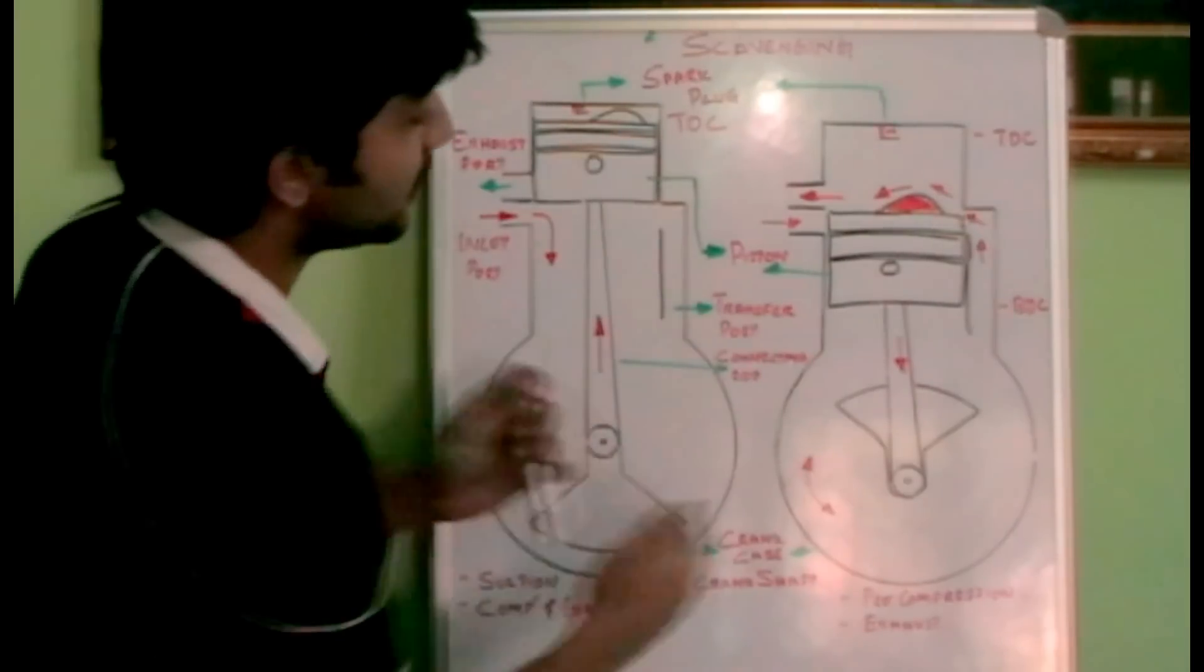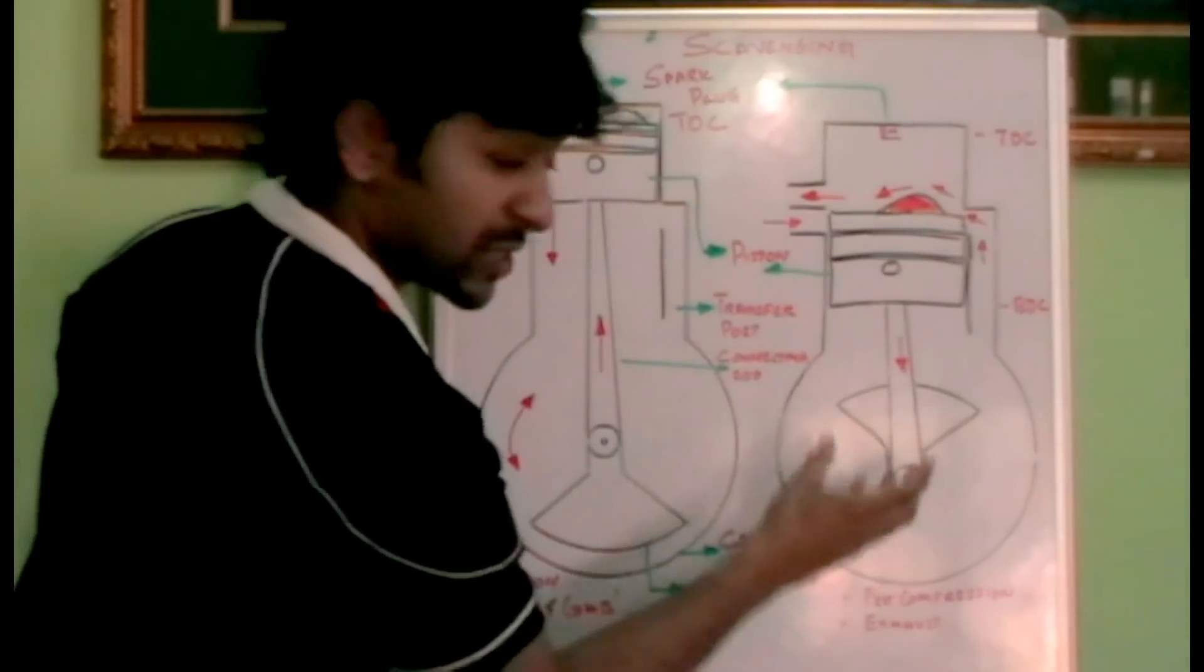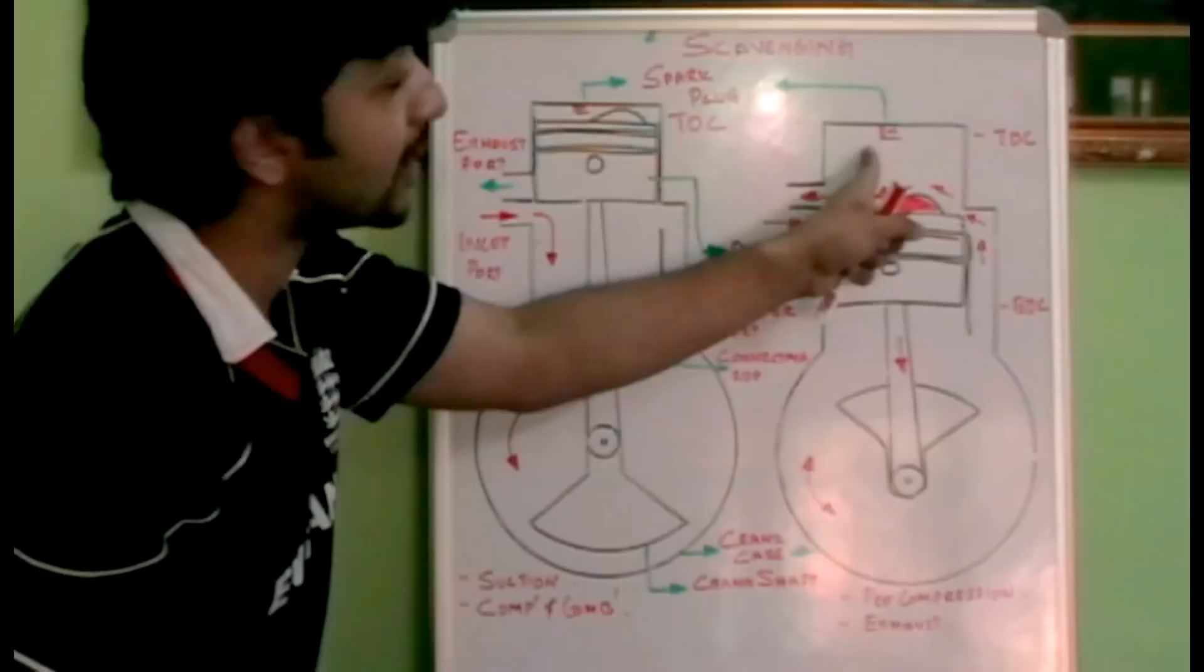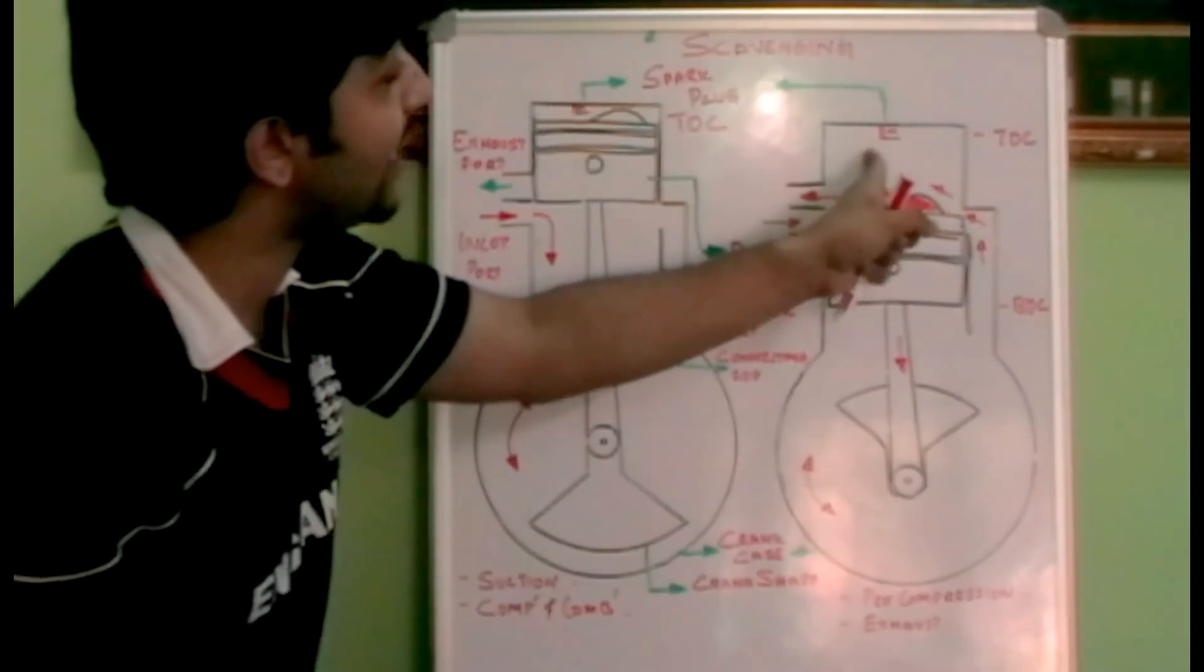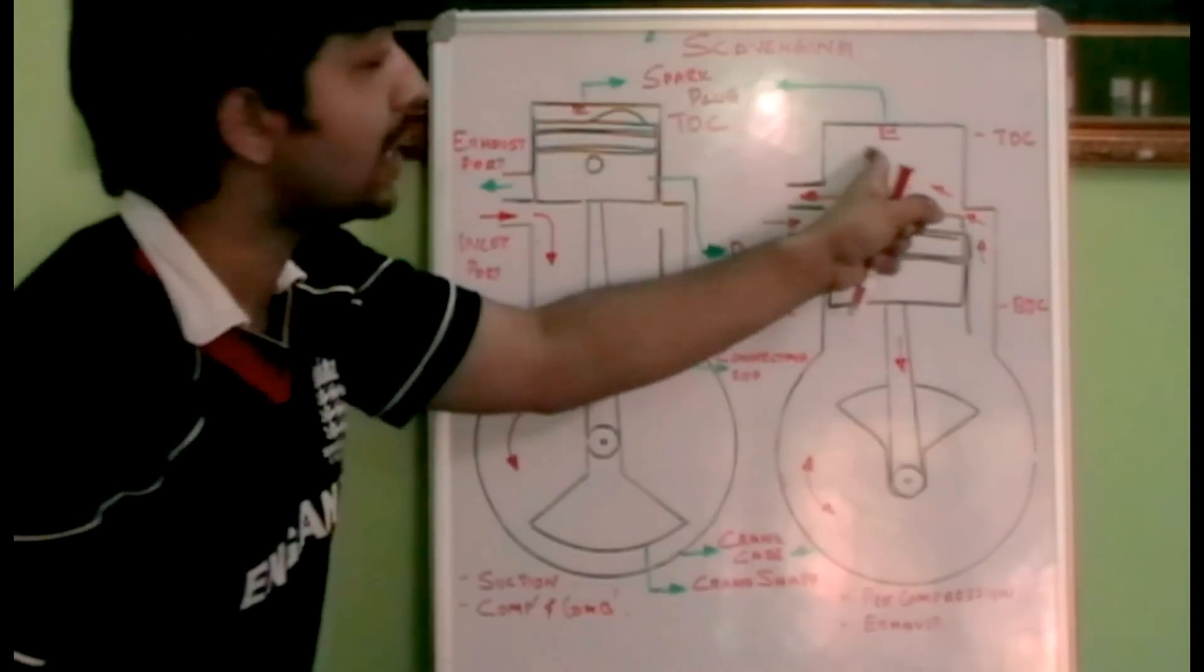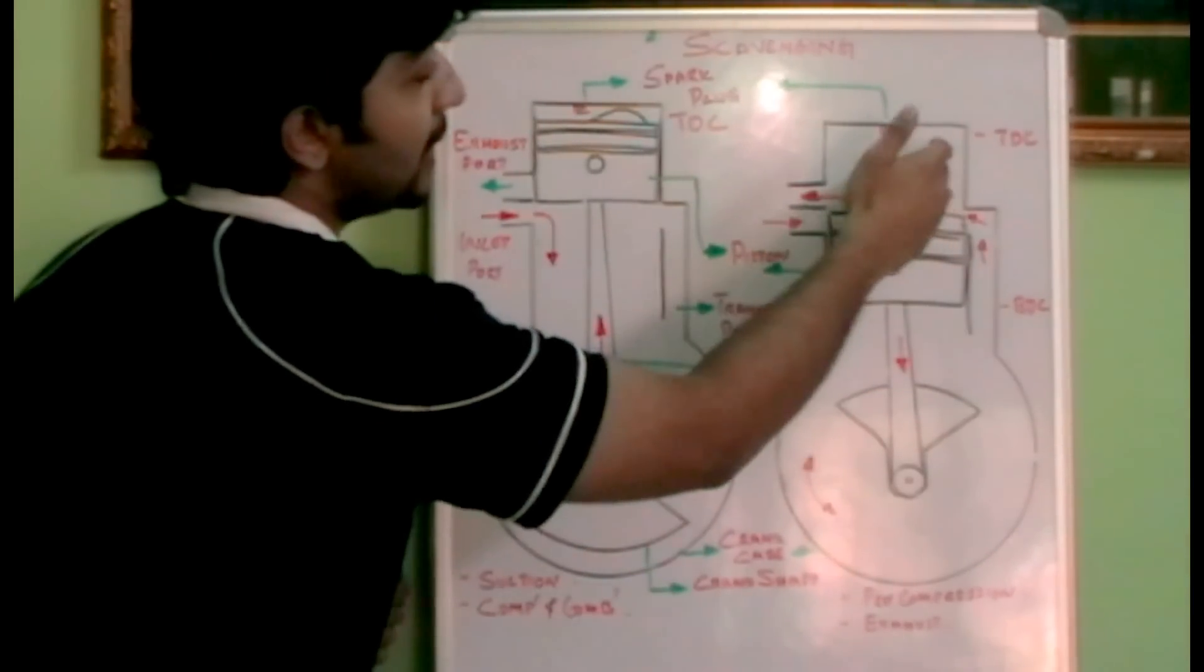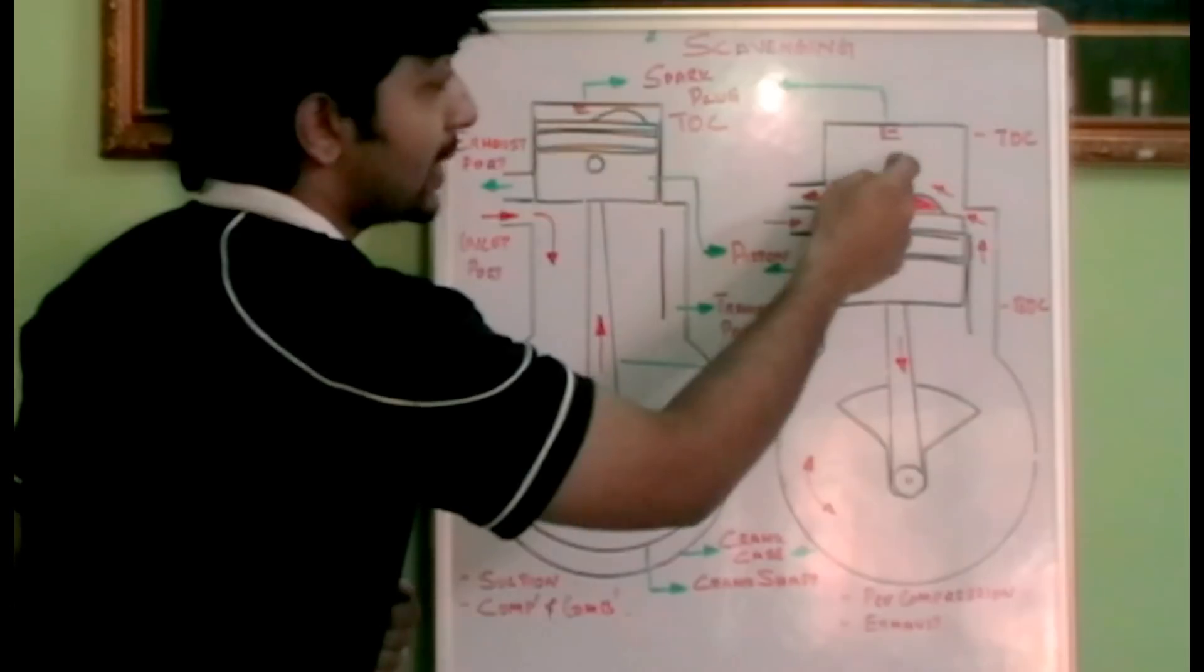What happens when the fresh charge, which is pre-compressed, moves towards the cylinder top dead center? We already have the exhaust gas filled in this port from the previous stroke. When it comes up here, it will push the exhaust gas out.